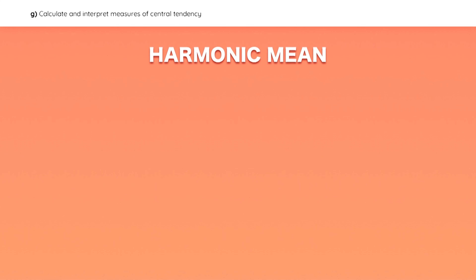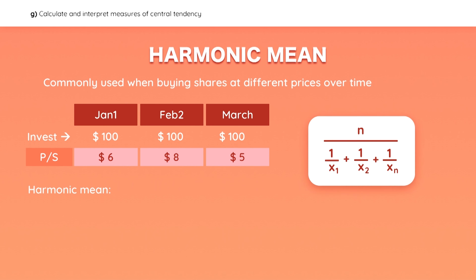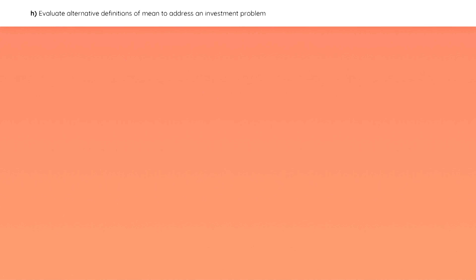The harmonic mean is typically used if you purchase shares at different prices over time and want to know the average cost per share. For example, if every month you invest $100 in the stock market — $6 per share in January, $8 per share in February, and $5 per share in March — the harmonic mean gives you an average share price of $6.10. A key point: when returns are not constant, the harmonic mean will be lower than the geometric mean, which will be lower than the arithmetic mean.